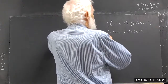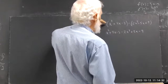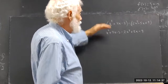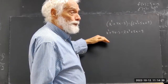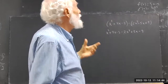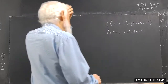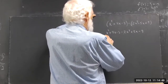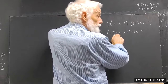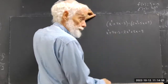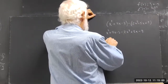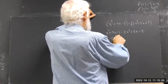We want this expression to have the same value as this expression no matter what x is. An equivalent expression will have the same value for every possible value of x. To make that happen, we can't combine an x squared term with an x term or with a constant term. So we're going to regroup this as x squared minus 2x squared.